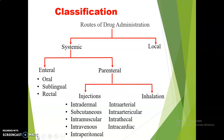Systemic effect means the drug first gets entry within the systemic circulation and then produces an effect. Whereas local effect means the drug produces the effect in a localized area. Routes of Drug Administration are classified into two main types: systemic route and local route. Systemic route is again subclassified as enteral route and parenteral route.